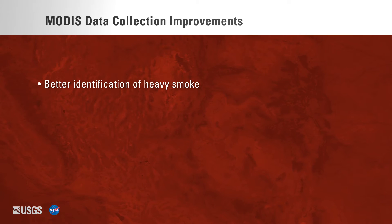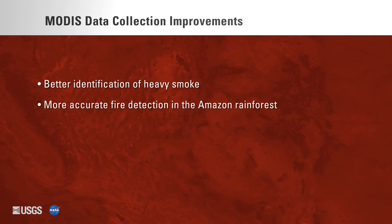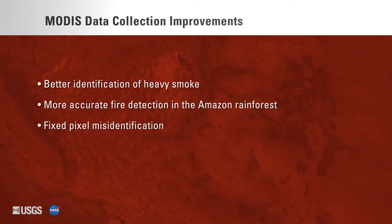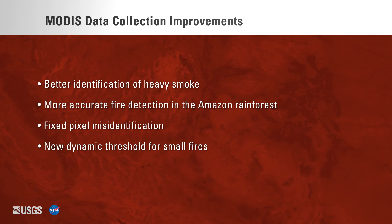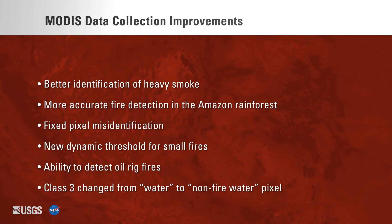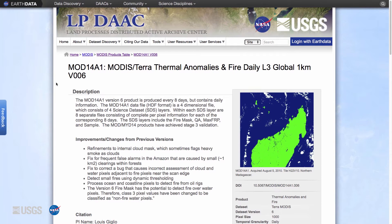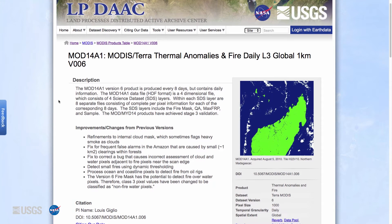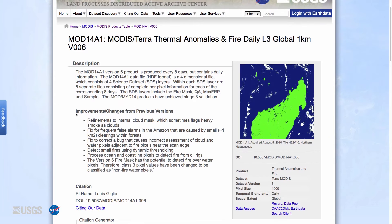Improvements include: refinements to the internal cloud mask to help distinguish between heavy smoke and clouds; fixes to prevent small forest clearings in the Amazon rainforest from generating a false flag for fire; corrections to the misidentification of pixels near the scan line; improvements in detection of small fires; detection of oil rig fires near coastlines and on the ocean surface; and identification of Class 3 pixel values as non-fire water pixels instead of water.